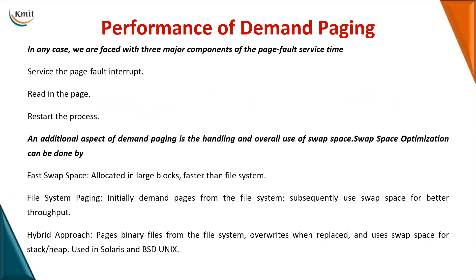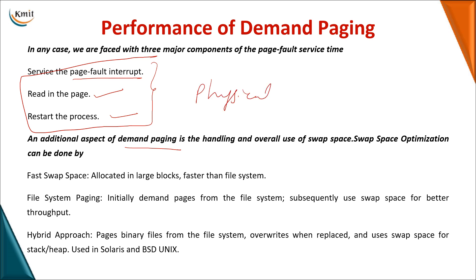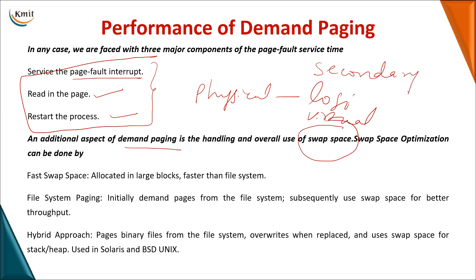In practice we calculate only three main components for page fault time: the time required for the page fault interrupt, the time required for reading in the page, and the time required for restarting the process. Regarding swap space: you may use a large dedicated swap space, use secondary memory as a file system, or use both. When swapping out you can use files; when overwriting you use secondary memory space.